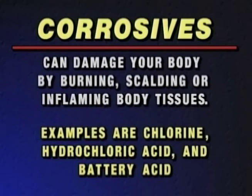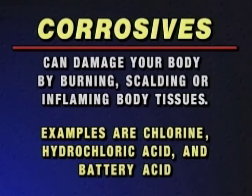Second, corrosives. This type of chemical is usually an irritant. Corrosives can damage your body by burning, scalding, or inflaming body tissues. Examples of corrosives are chlorine, hydrochloric acid, and of course, battery acid.